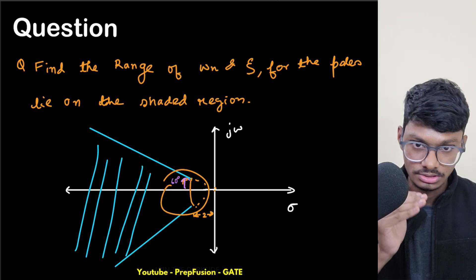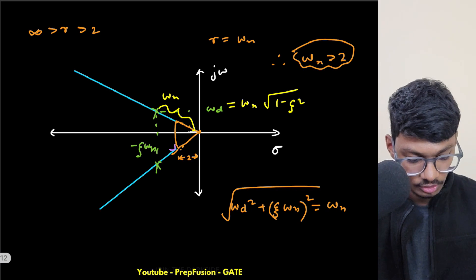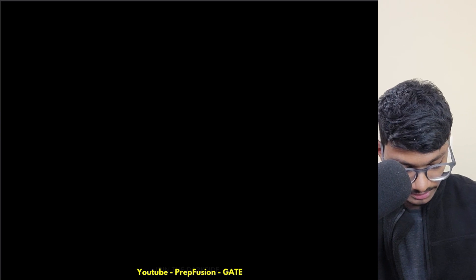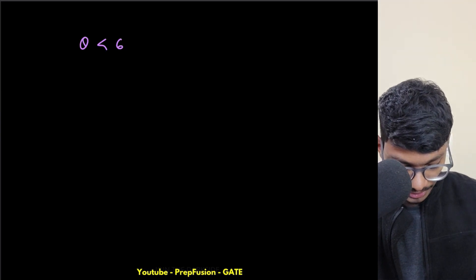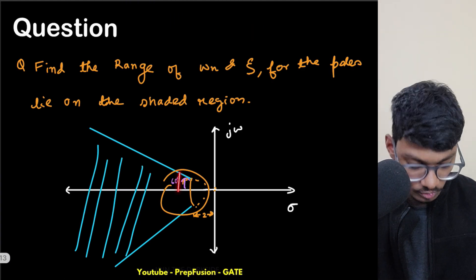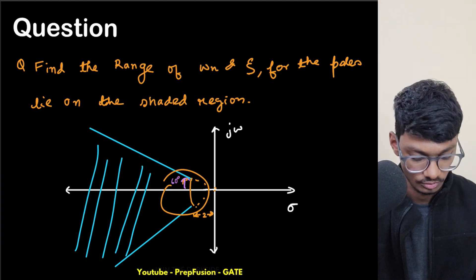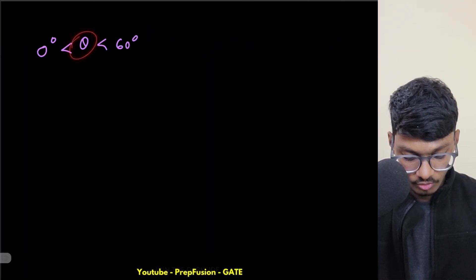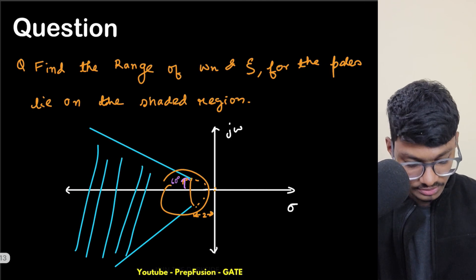So this angle is varying from 60 to zero. I got the condition for omega n, now let's do the condition for zeta. So my angle theta: maximum value it can go to is 60 and minimum it can go to is obviously zero. It can go to x-axis, then it goes to minus, which is the same symmetrically.